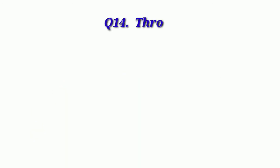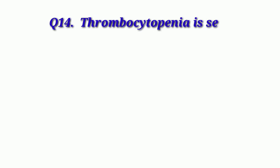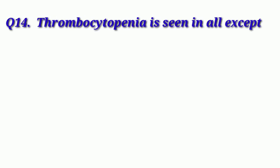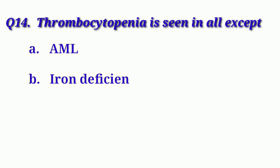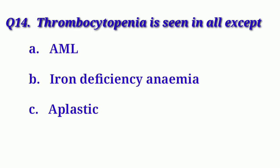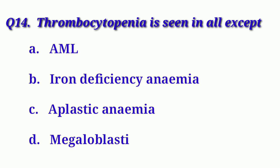Our next question is: Thrombocytopenia is seen in all except. Option A: AML. Option B: Iron deficiency anemia. Option C: Aplastic anemia. And Option D: Megaloblastic anemia.